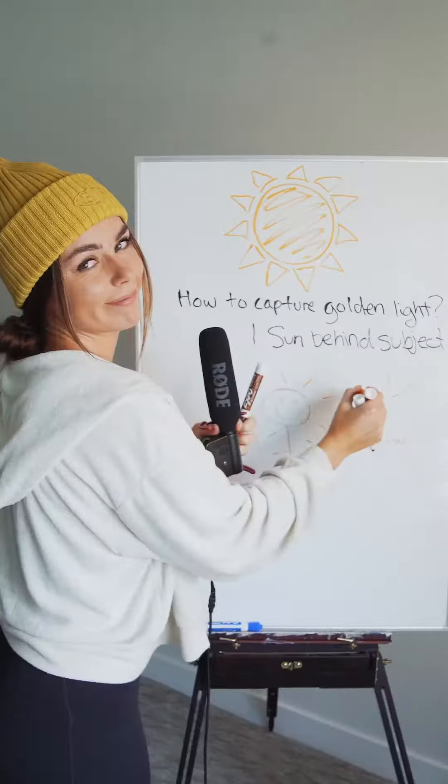The second way I like to use it is a sun flare. Capture the Sun on the edge and it's gonna create a star. You can raise your aperture to f8 to f11.